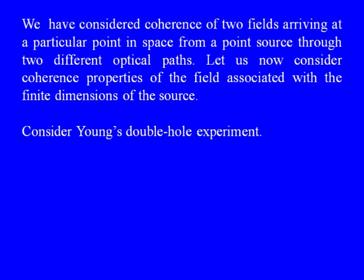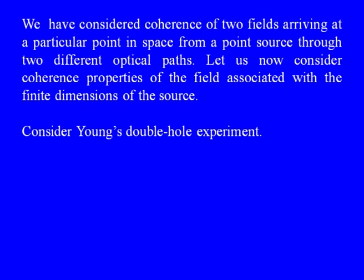We have considered coherence of two fields arriving at a particular point in space from a point source through two different optical paths. Now let us consider coherence properties of the field associated with the finite dimensions of the source — so the source is no longer a point source. Again, consider Young's double hole experiment.